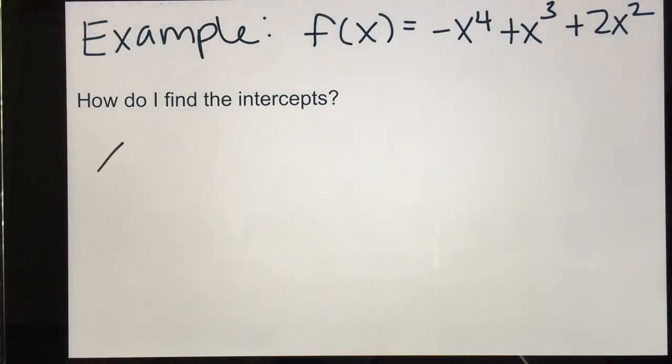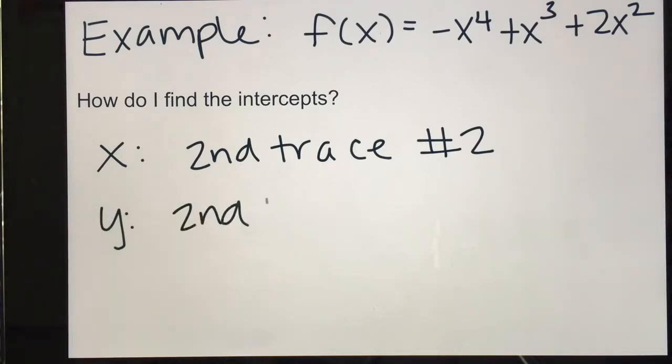So if you recall, to find x-intercepts, we're going to do second trace, option number 2 to find the zeros of the graph. And for y-intercepts, we're going to do second trace, option number 1, and we're going to plug in x equals 0 to find the y-intercepts of the graph.